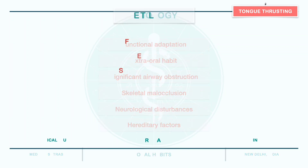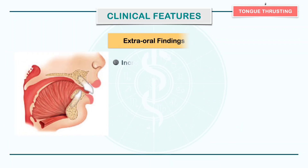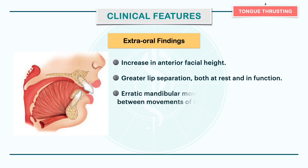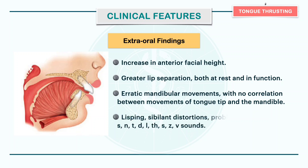Now coming to the clinical features. Extraorally, there will be increase in anterior facial height and greater lip separation, both at rest and in function, with lack of compensatory lip activity during swallowing. Mandibular movements are more erratic and there is no correlation between the movements of tongue tip and the mandible. The patient will present with speech disorders such as lisping, sibilant distortions and problems in articulation.